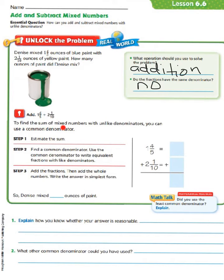To find the sum of mixed numbers with unlike denominators, you can use a common denominator. The first thing we're going to do is estimate the sum. We've got 1 and 4/5 and 2 and 1/10. 1 and 4/5 would round since we're only one piece away from the whole, it would round to 2. And since we've only got one piece out of the 10 missing, we would round to 2. So it would be 2 plus 2 equals 4 for our estimate.